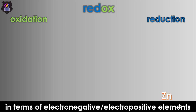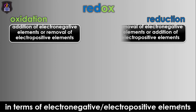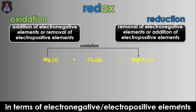In terms of electronegative and electropositive elements, oxidation is the addition of electronegative elements or the removal of electropositive elements, while reduction is the removal of electronegative elements or the addition of electropositive elements to a substance. Let's use the reaction between magnesium ribbon and chlorine gas to form magnesium chloride as a case study. In this reaction, magnesium is oxidized to magnesium chloride because an electronegative element has been added to it.